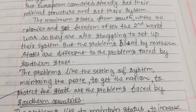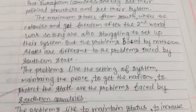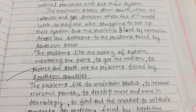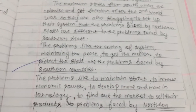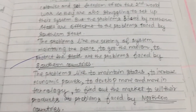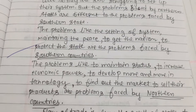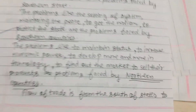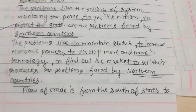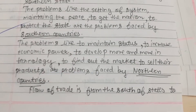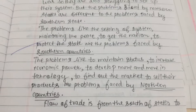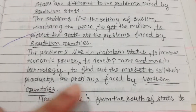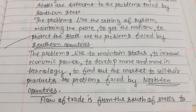The problems faced by Northern states are different from those faced by Southern states. Southern countries face problems like setting up their political system, maintaining peace, and protecting the state. Northern countries face problems like maintaining their status, increasing economic power, developing technology, finding new markets, and selling their products.